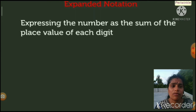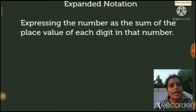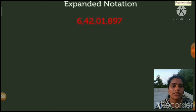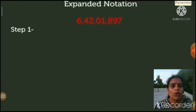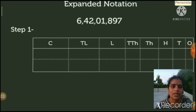Expanded form means expressing a number as the sum of the place value of each digit in that number. For example: six crore forty-two lakh one thousand eight hundred ninety-seven. Step one: we apply this number in the Indian place value chart.